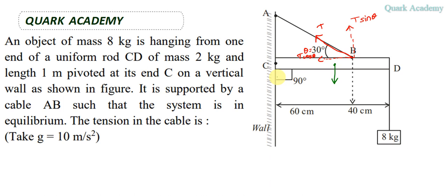One more force will act, that is acceleration due to gravity of the rod, and it will act at its center of gravity, which is 50 centimeters from this wall. This gravitational force we can write as mass times gravity. The mass of the rod is 2 kg, so I'm writing 2 into g. Another force is due to this 8 kg mass.